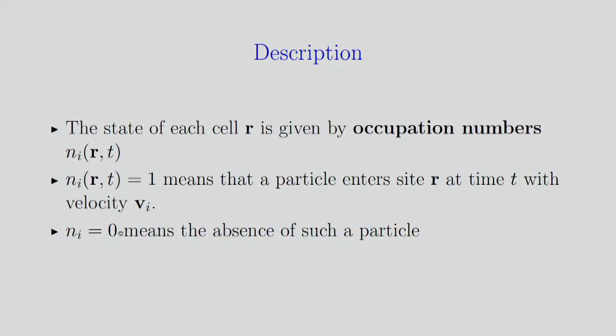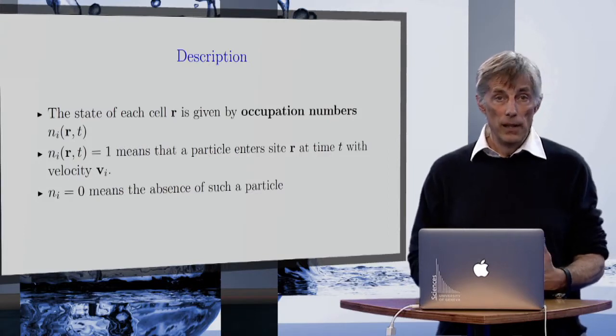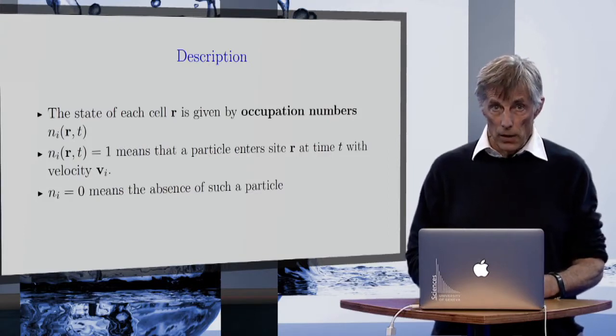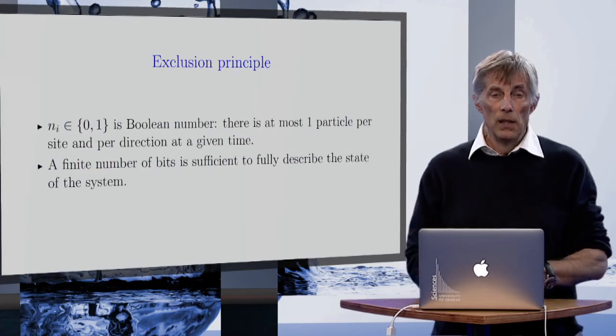It means that you have a particle entering when this number is 1, and if there's no particle along this channel or direction, then it is 0. It's really an Eulerian description where you sit on a cell and you look whether something arises or not in this direction at a given time and position.